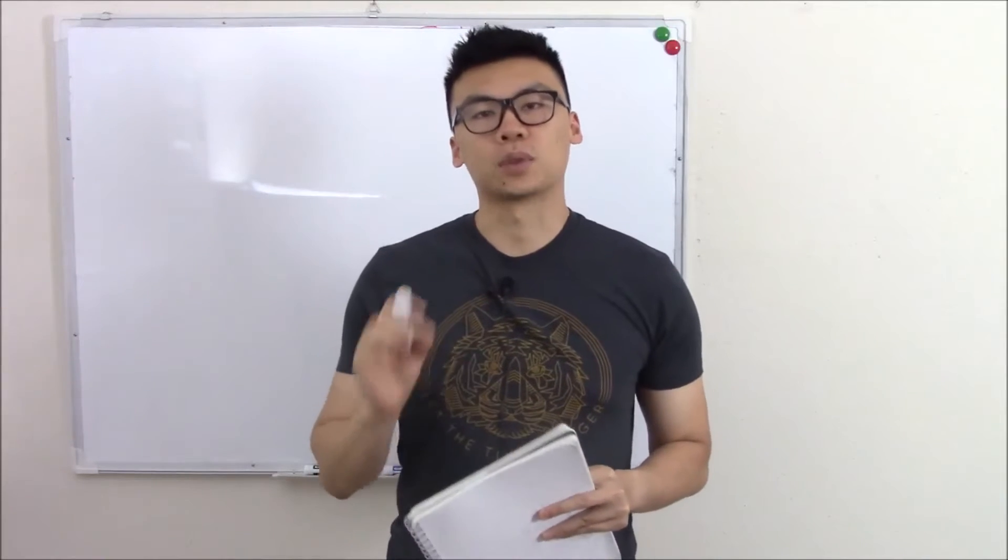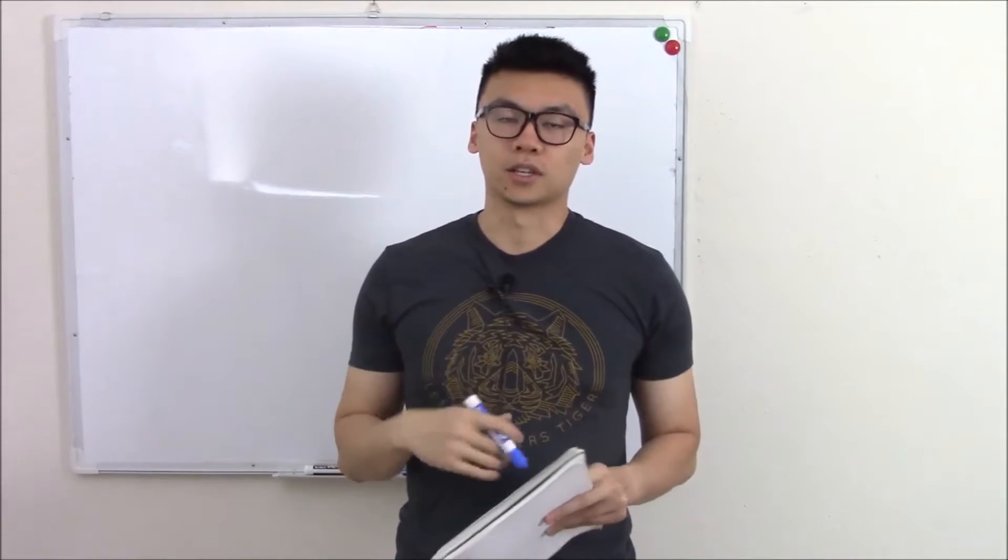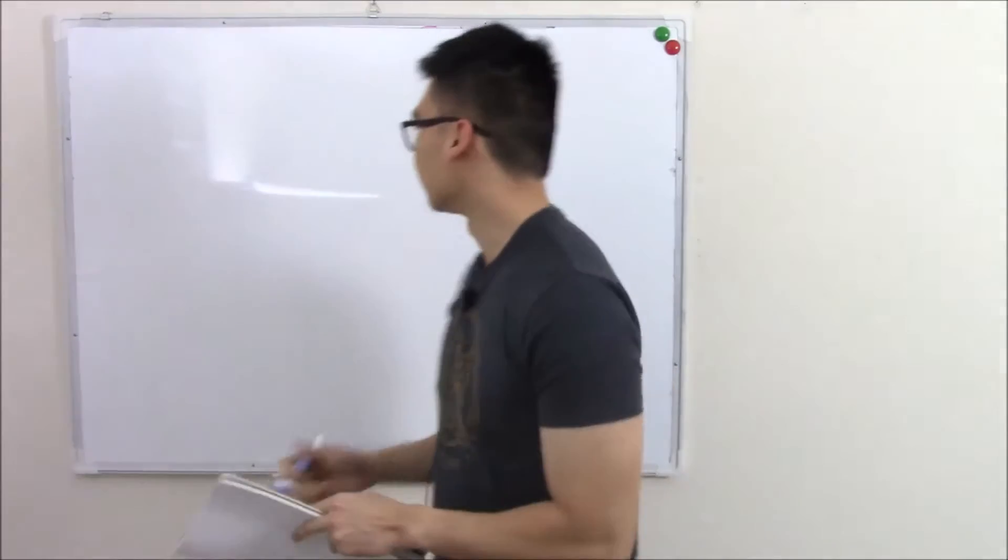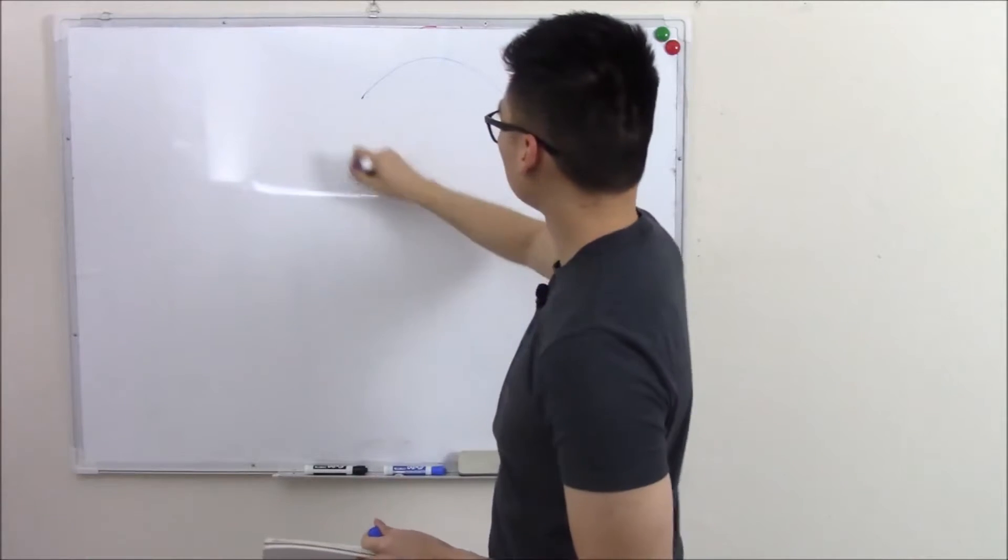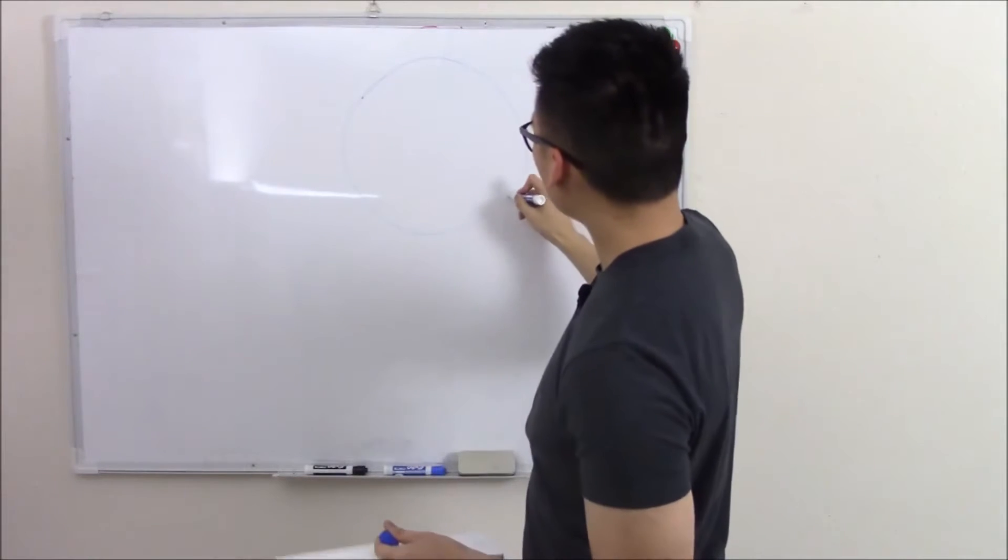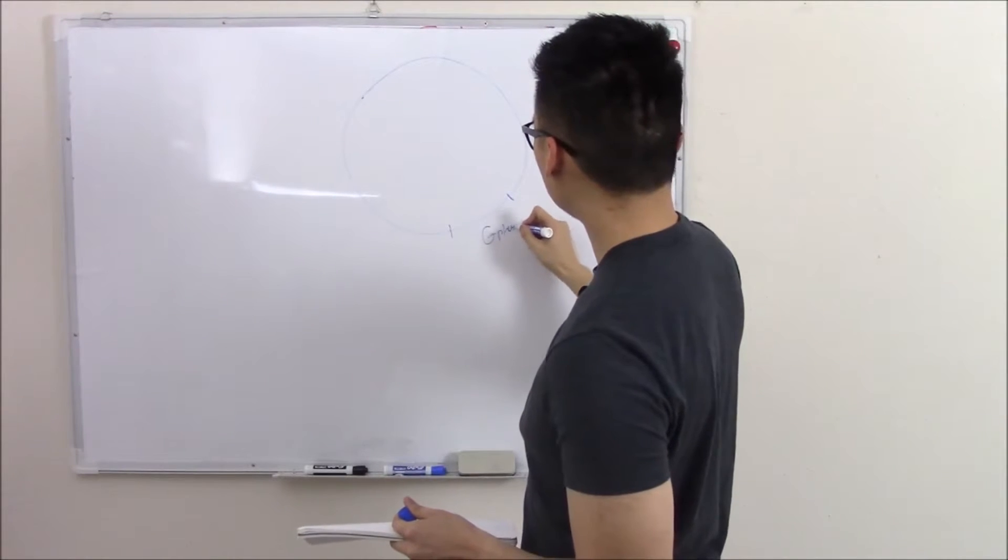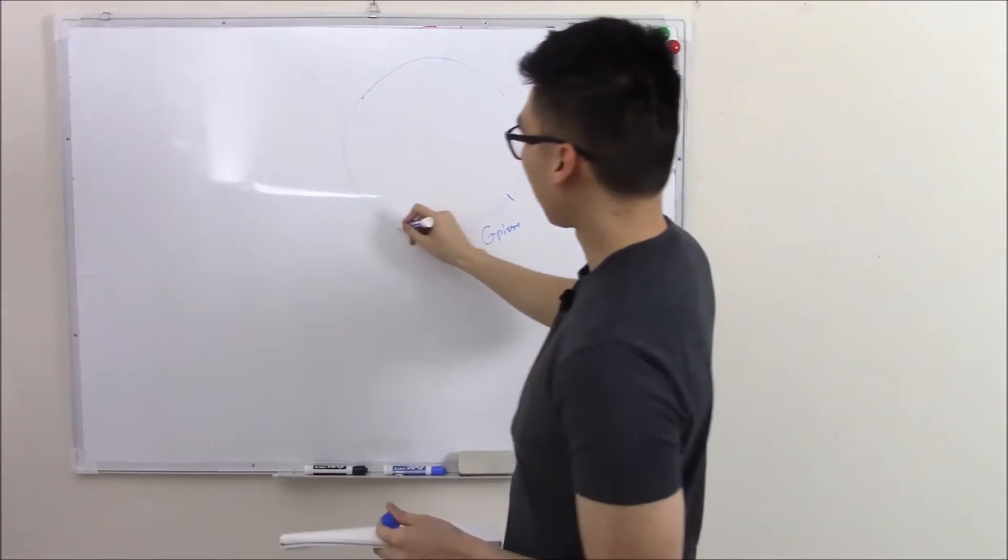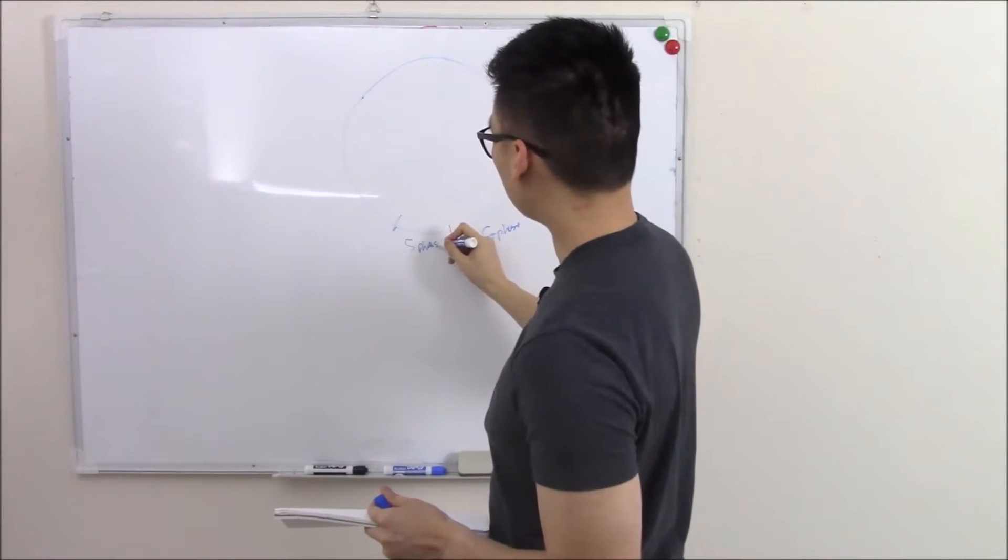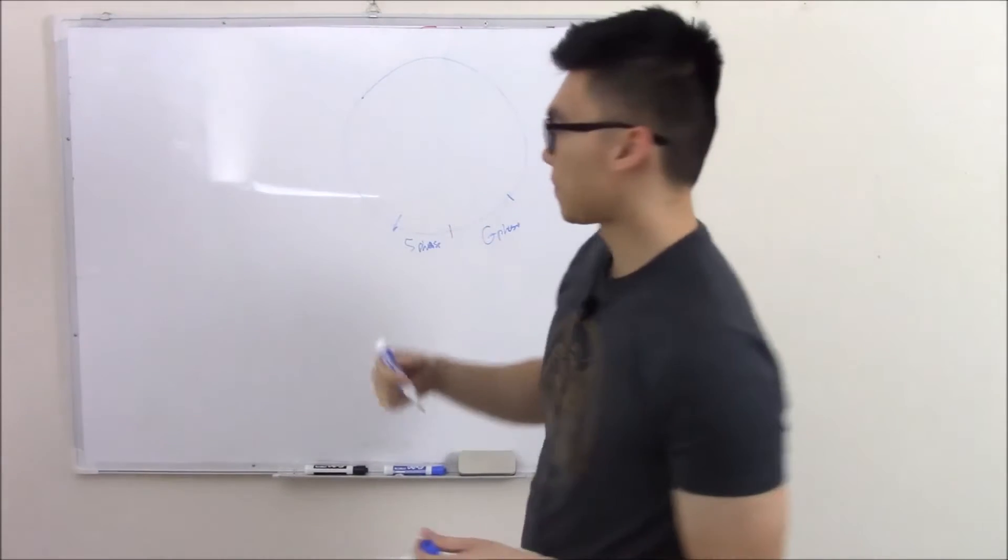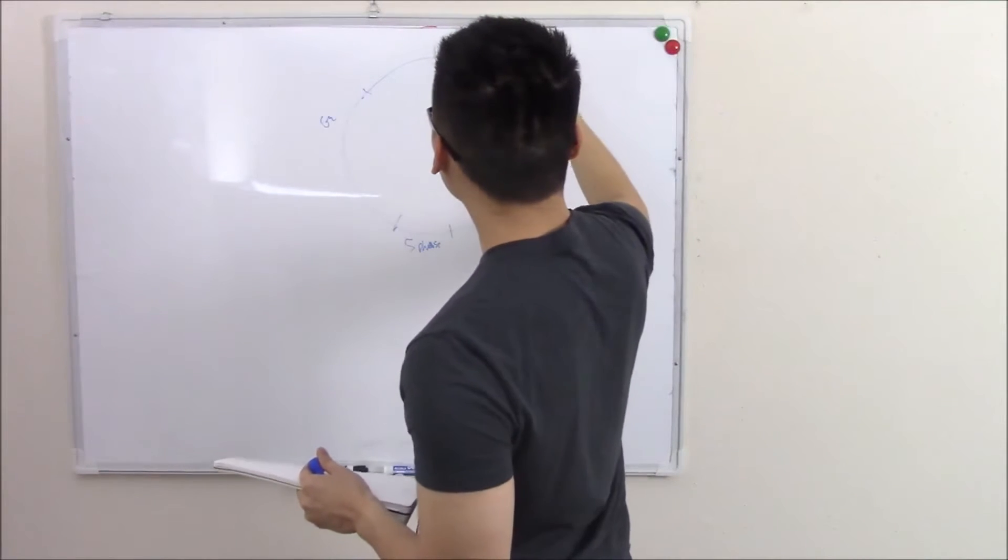This video is going to be on oncology, in particular cancer drugs. Cancer drugs work by stopping cell proliferation, in particular cancer cell proliferation. So let's just recap our cell cycle. You have your G phase where cells grow, S phase where you duplicate and synthesize DNA, G2, and then finally mitosis.